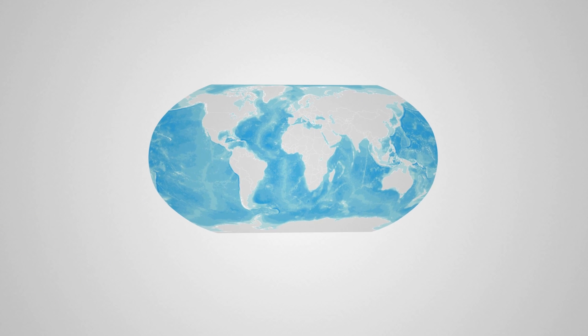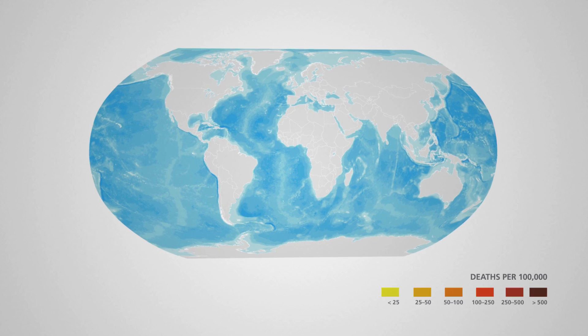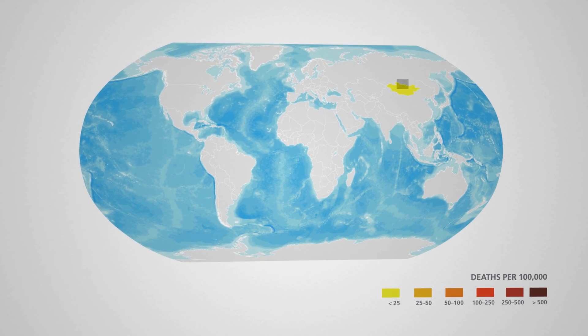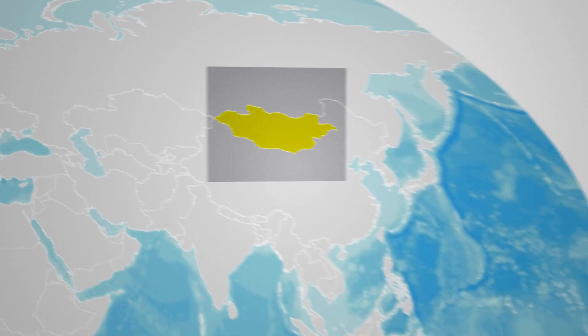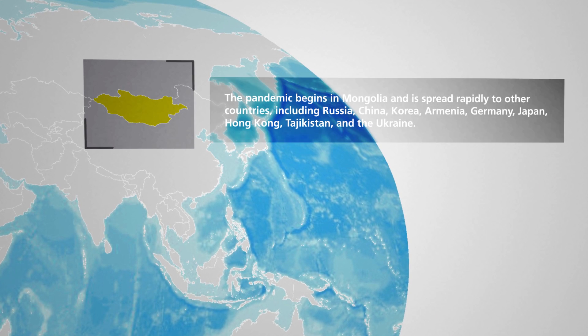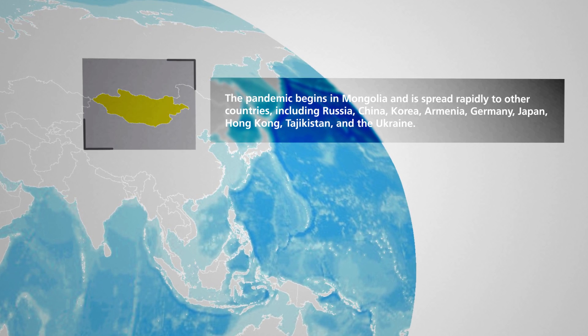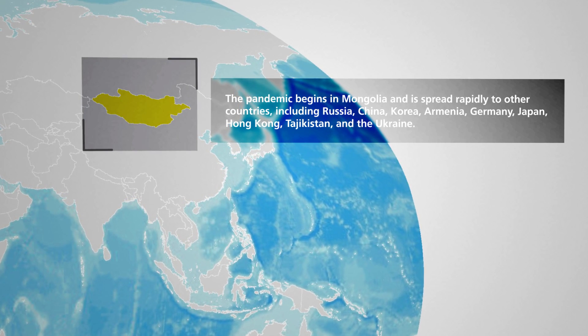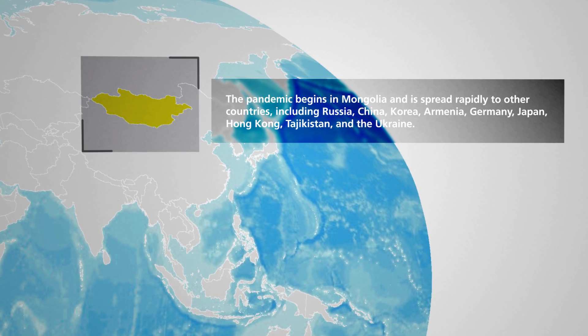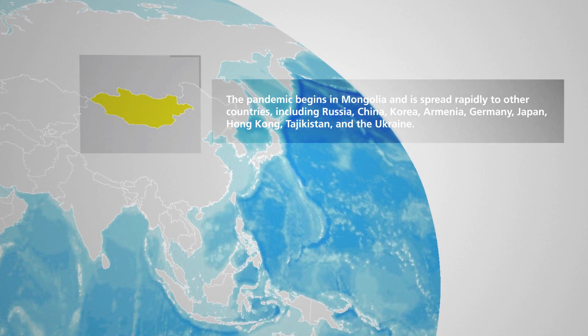The map you'll see shows the progression of the event, including the number of mortalities in each country. The pandemic begins in Mongolia and spreads rapidly to other countries including Russia, China, Korea, Armenia, Germany, Japan, Hong Kong, Tajikistan, and the Ukraine.